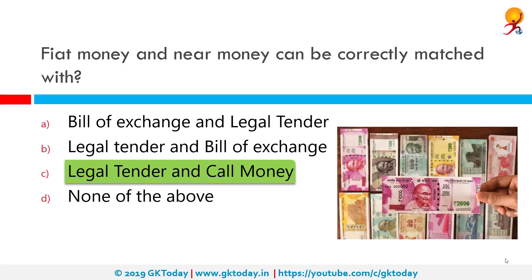A good example of fiat money is our day-to-day currency — it's just paper, and the only reason any note is worth something is because the government deems it to be legal tender. Similarly, near money is a term used in economics to describe highly liquid assets which are not cash but can be easily converted into cash — for example, gold.